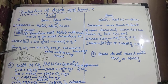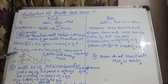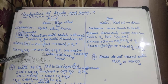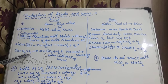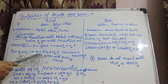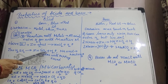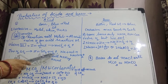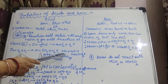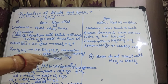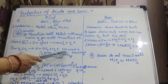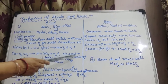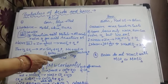Another example: zinc metal is reacting with H₂SO₄, sulfuric acid. Here, the salt we are getting is ZnSO₄ and hydrogen gas is evolving out. Next, sodium metal reacting with HCl — sodium is more reactive than hydrogen.